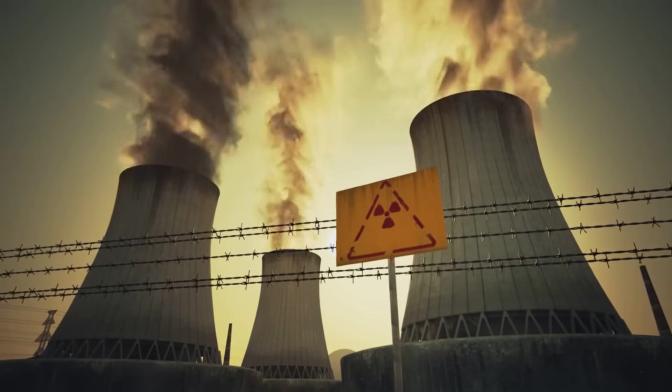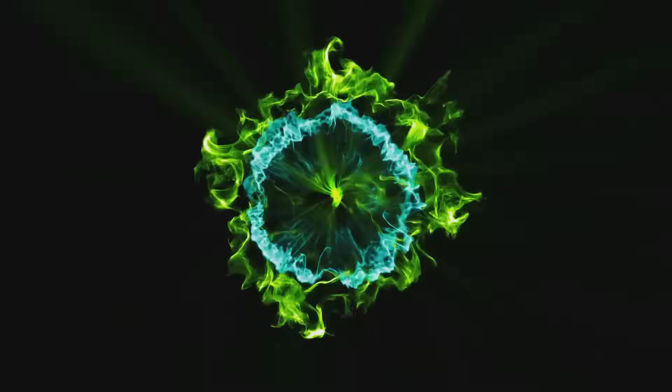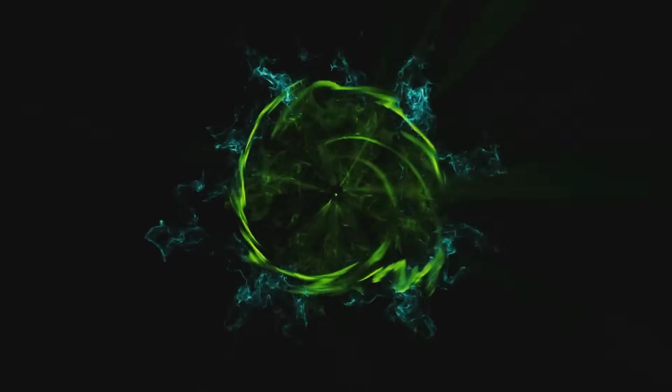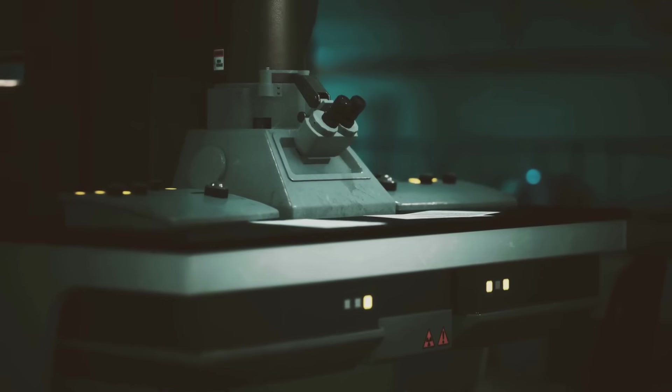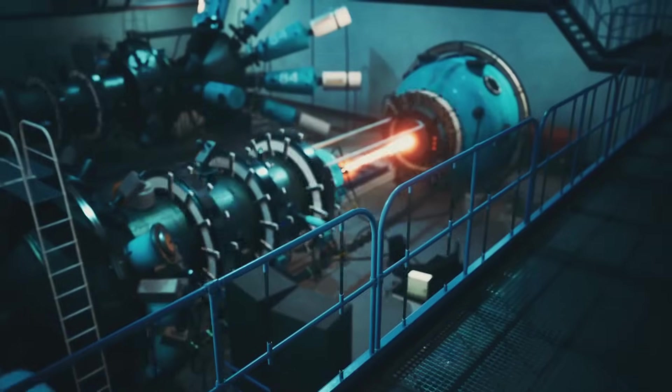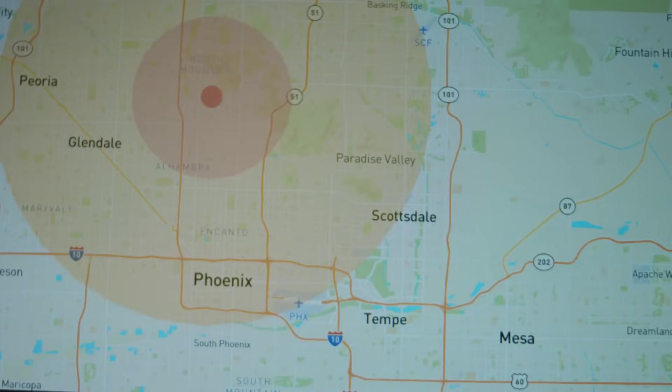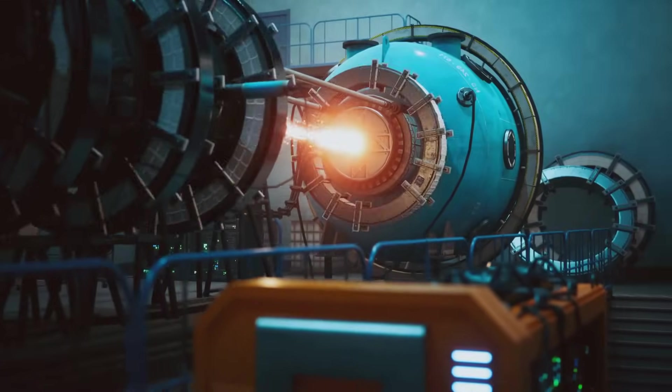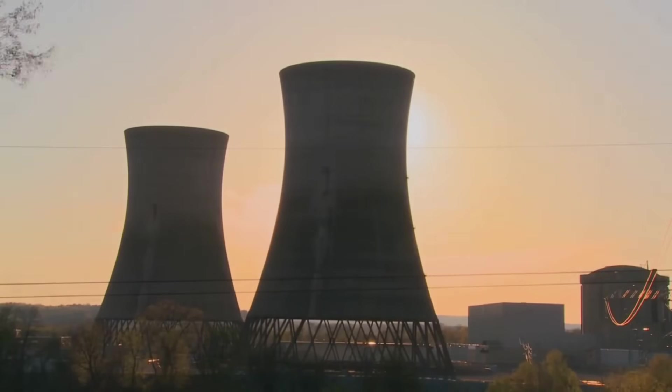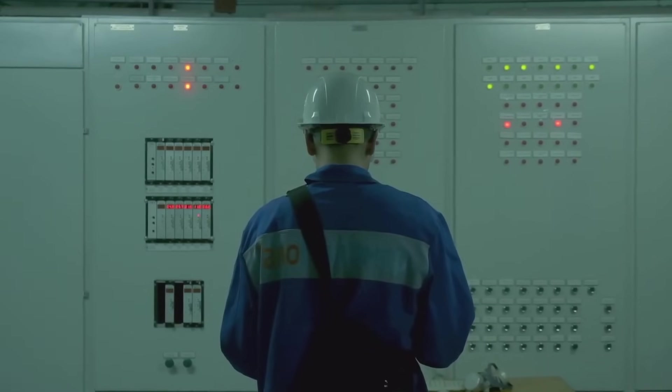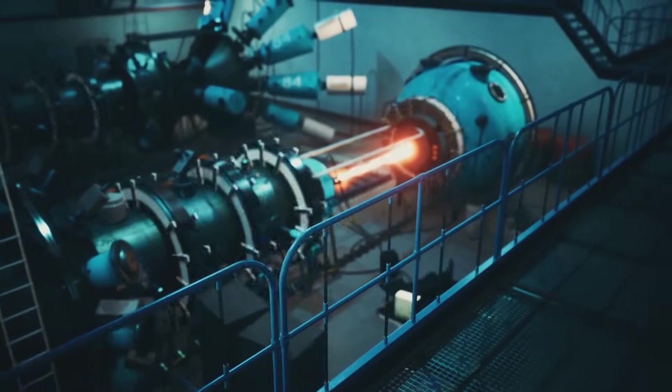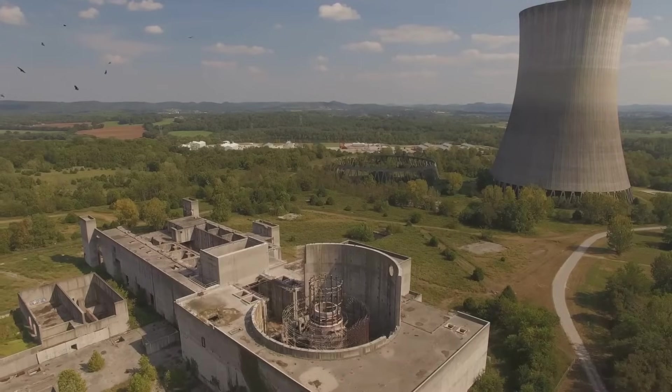Less than that is subcritical, the reaction dies out. More is supercritical, the reaction grows explosively. In power plants, operators keep the reactor exactly at critical, using control rods to balance the reaction. In nuclear weapons, two subcritical masses are slammed together to go supercritical, causing a massive explosion. Achieving and controlling critical mass is the key to both nuclear power and weapons. In reactors, it's all about balance and safety. In bombs, it's about unleashing all the energy at once. That's why control is everything in nuclear technology.